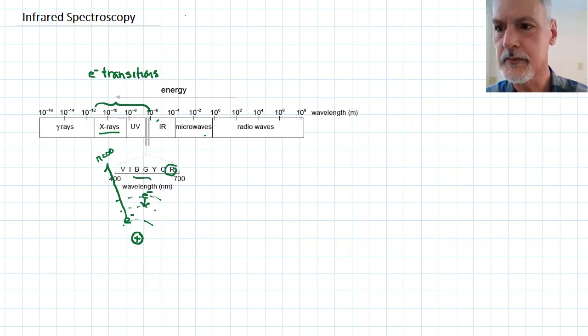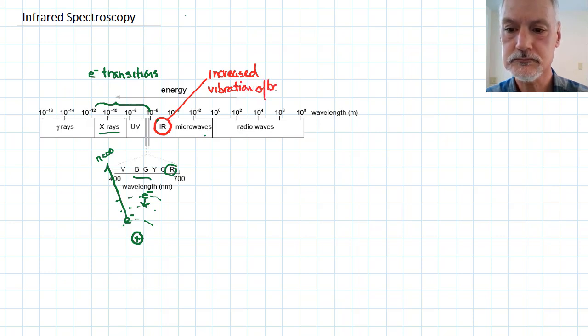Now, what happens if we submit infrared radiation on a substance? Well, it turns out that infrared radiation lacks the energy to cause the electron to really move much from one orbit to another. The majority of infrared radiation causes increased vibrational motion of bonds. And this is the basis of infrared spectroscopy.